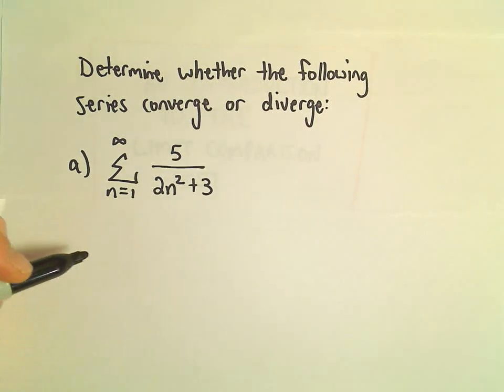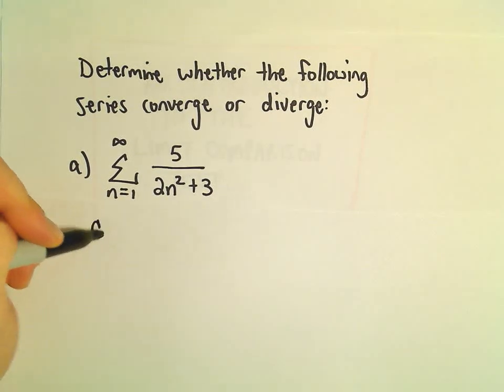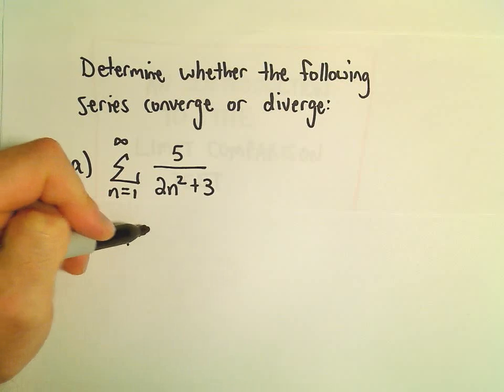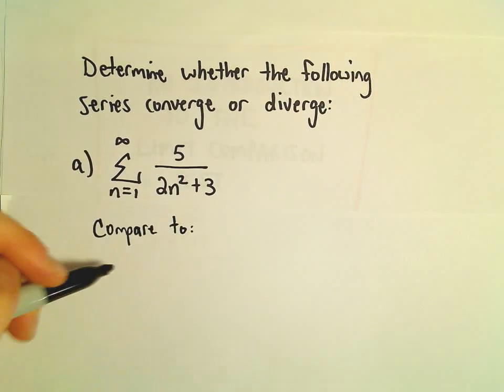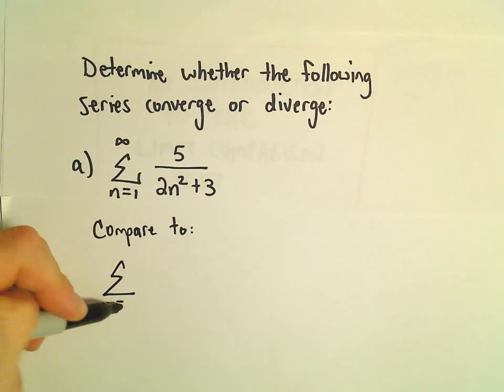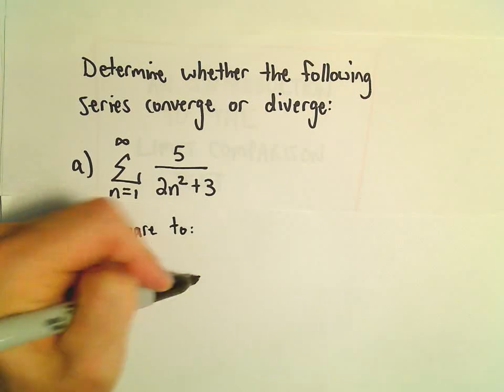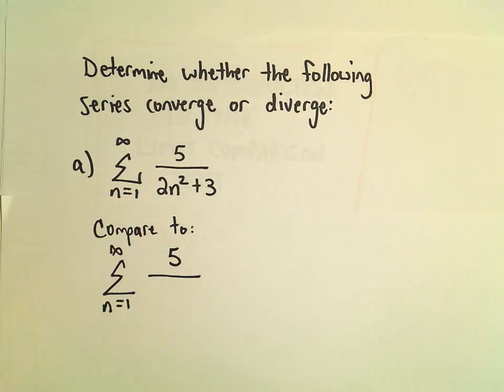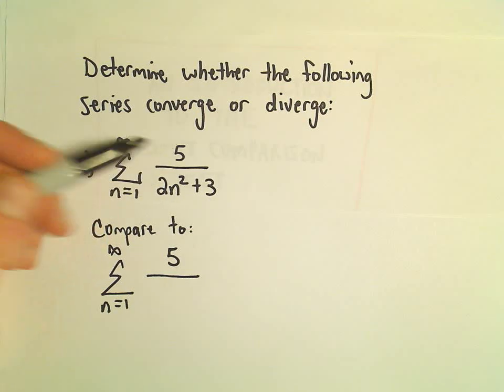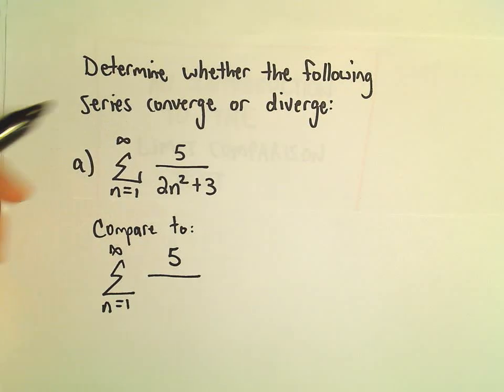When I decide what series to compare this to, I just keep what I call dominant terms. So in the numerator, the only term that is there is the 5. And when it's a constant, it doesn't even matter whether you keep the constant or not.